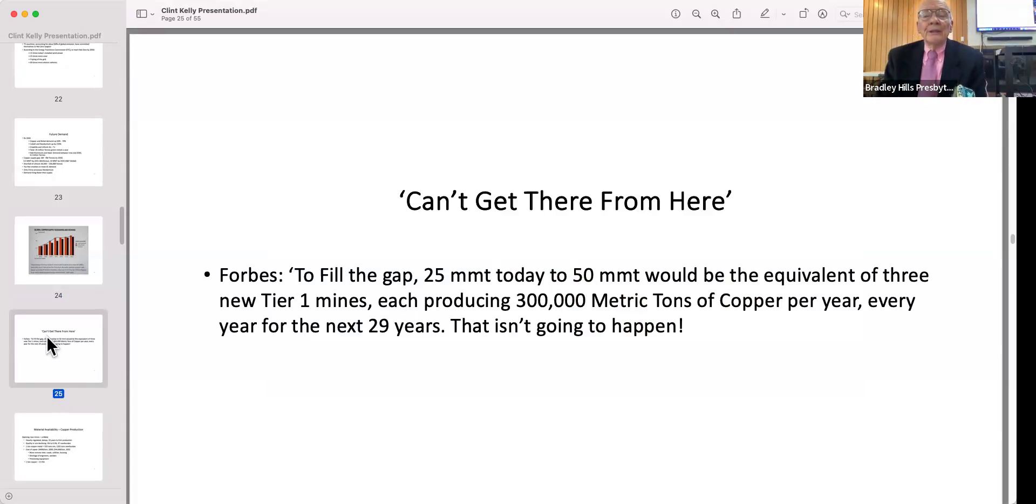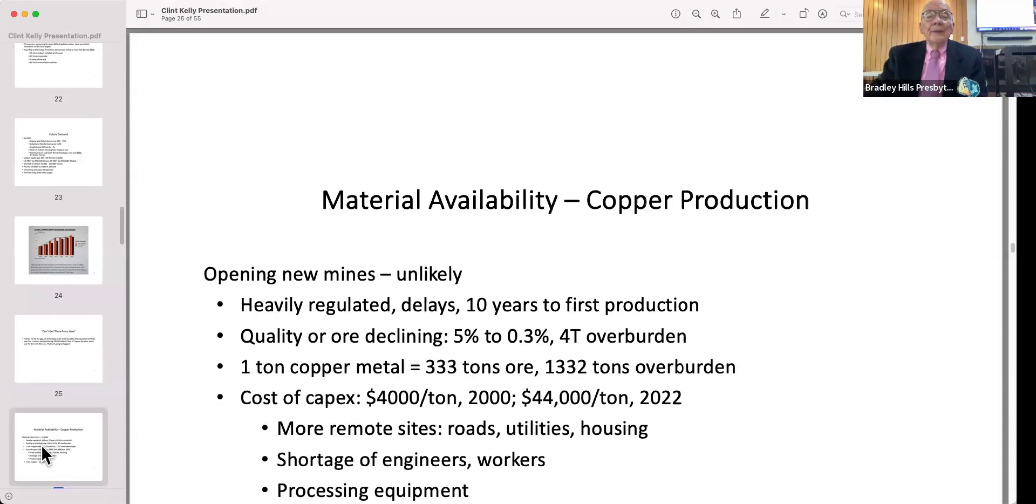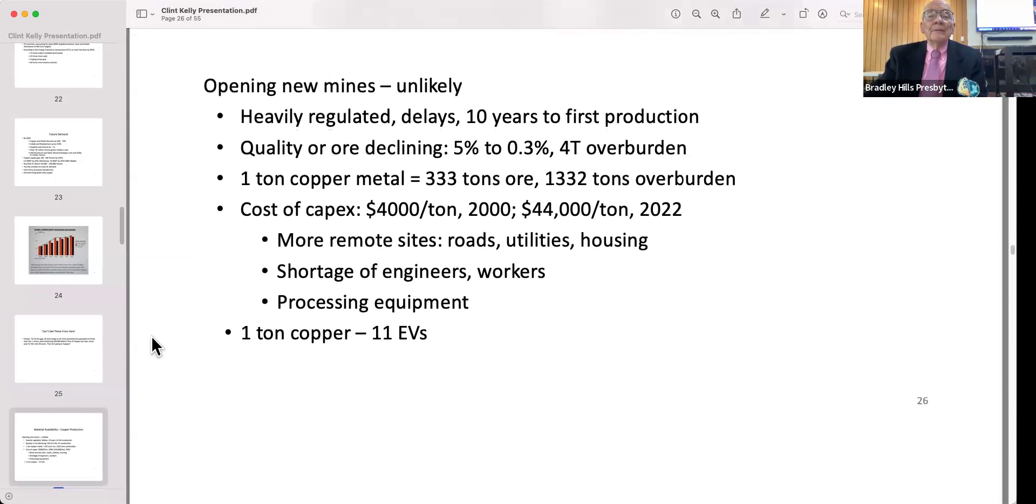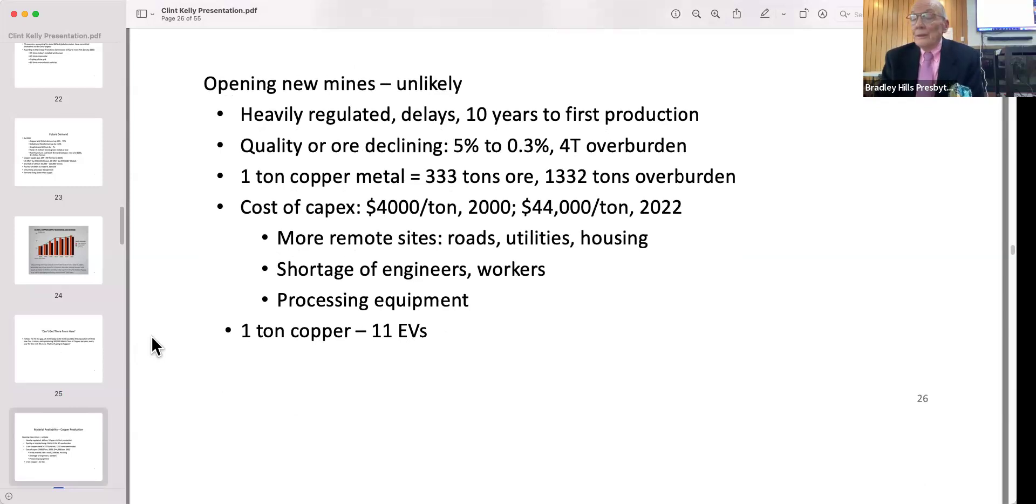Forbes has written extensively on these resource issues. To move from 25 million metric tons today to 50 would be the equivalent of opening up a new tier one mine—that's a mine that produces a minimum of 300,000 tons a year for the next 25 years. That's probably not going to happen. It's very unlikely that new mines will be opened. Quality of ore is declining. In the 1950s you get about five percent copper metal in the copper ore; now it's down to three-tenths of one percent.